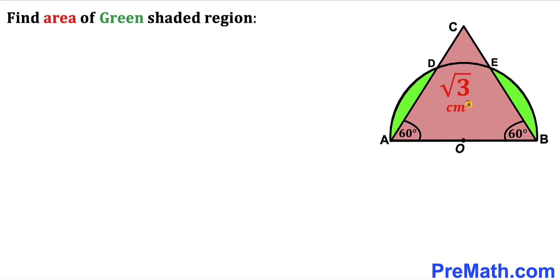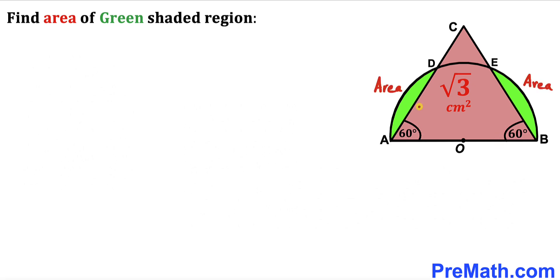Welcome to pre-math. In this video we have an equilateral triangle ABC and a semicircle with center O put together, such that the area of the pink triangle ABC is √3 centimeter square. Angle BAC is 60 degrees and angle ABC is 60 degrees as well. Our task is to calculate the area of the green shaded region — this area and this area combined.